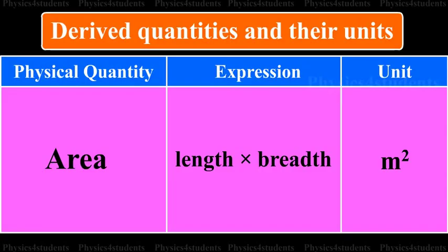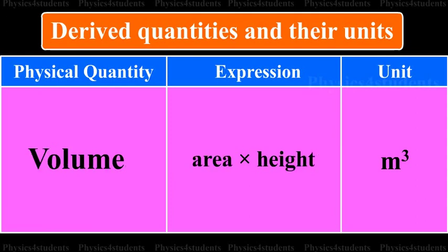Physical quantity is area. Its expression is length into breadth. Its unit is m square. Physical quantity is volume. Its expression is area into height. Its unit is m cube.